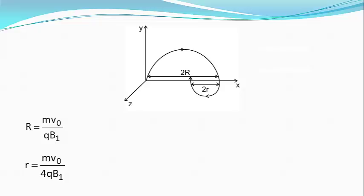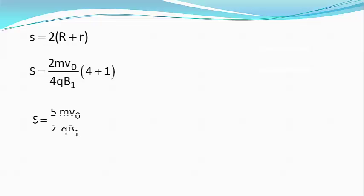So the total distance travelled by the particle parallel to x-axis during the time 0 to capital T is given by s equals twice into capital R plus small r, or s equals 2 into m v0 divided by 4 qB1 bracket starts 4 plus 1, which simplifies to give me s equals 5 by 2 m v0 divided by qB1, equation 1.